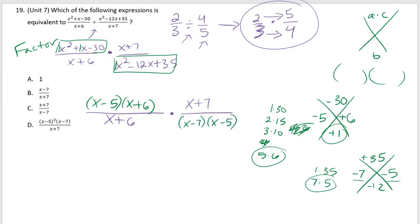And now that everything's factored, we're going to look for factors that we can simplify into a 1 to 1 ratio. So we definitely can simplify x plus 6 and x plus 6 right here, and then x minus 5 on the top, x minus 5 on the bottom. The only two factors that are left are these two, so that results in your answer. So the answer would be C.